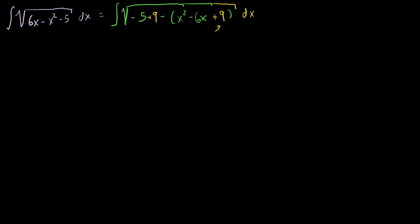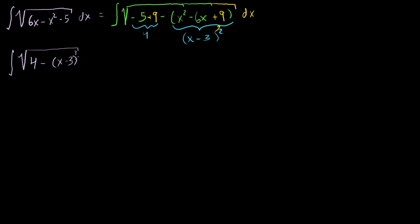This gets it into a form I like. The minus 5 and plus 9 right here just becomes a 4, and then this term right here becomes x minus 3 squared. So my indefinite integral now becomes the integral of the square root of 4 minus (x minus 3) squared dx. Now this is starting to look like a form I like, but I want a 1 here instead of a 4. So let's factor a 4 out. That gives the integral of the radical of 4 times 1 minus (x minus 3) squared over 4, which I just obtained by taking 4 out of both terms.